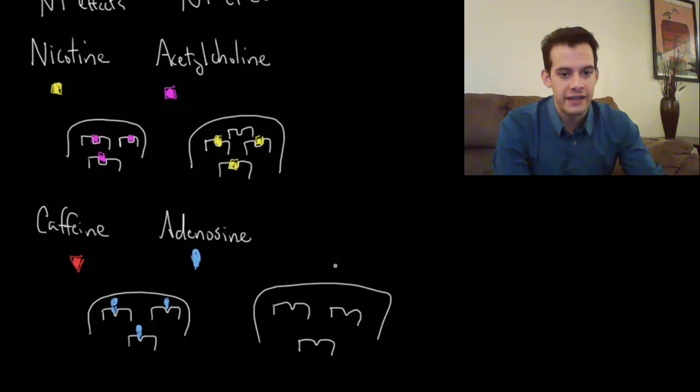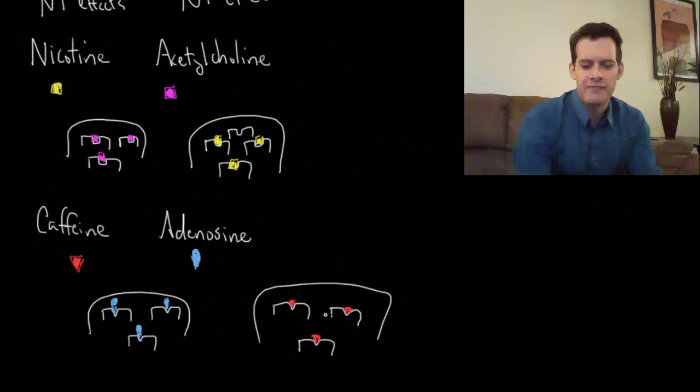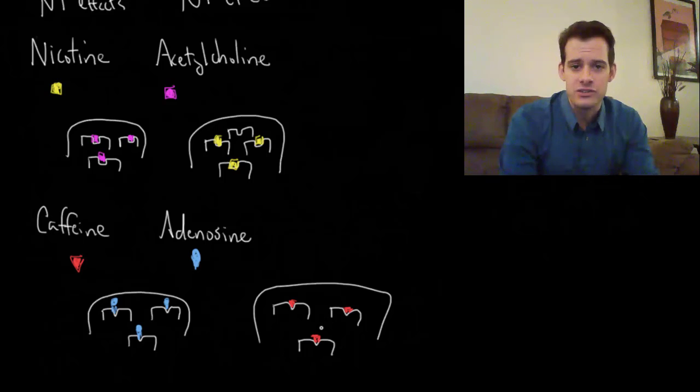And now we're going to add some caffeine in here. Caffeine gets into the bloodstream, into the brain, and starts binding to these receptors. But in this case, the caffeine binds to the receptor, but it doesn't do anything. It doesn't have that same inhibiting effect that the adenosine would have. It doesn't slow the neuron down. In fact, this neuron is going to speed up because it used to be getting some adenosine signals, but now the caffeine is blocking those signals.